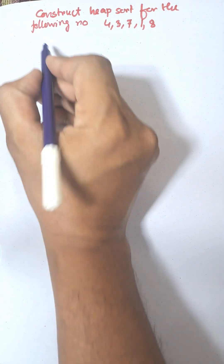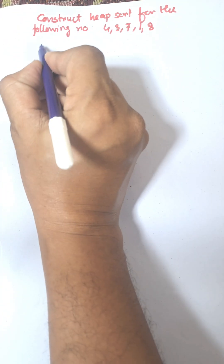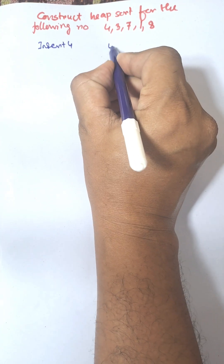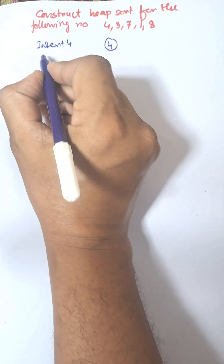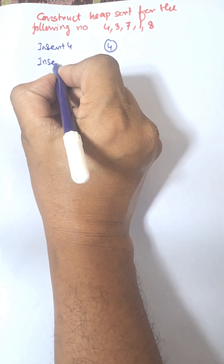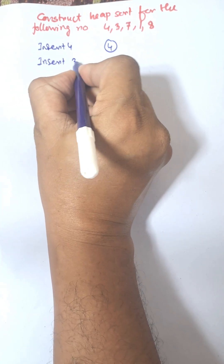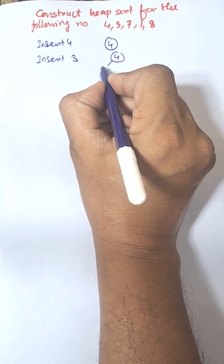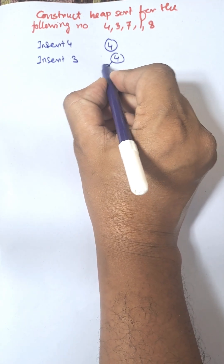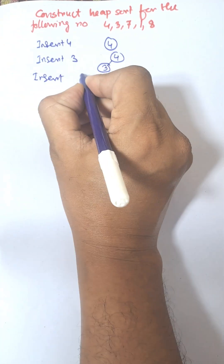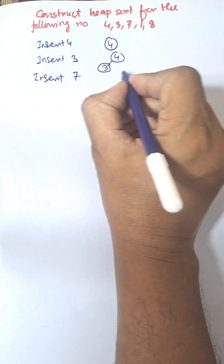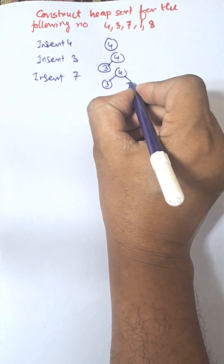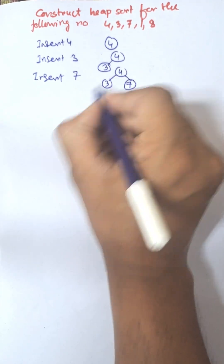We need to construct a max heap. Insert 4 — the 4 will be the root. Next, insert 3; 3 will be the left child of the root. Insert 7; 7 will be the right child of 4.